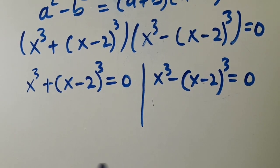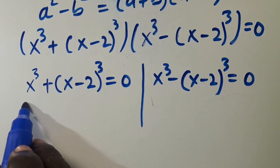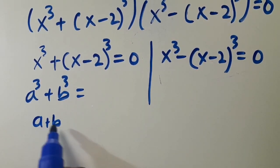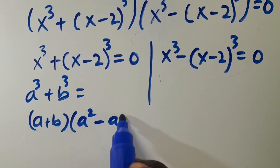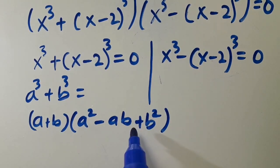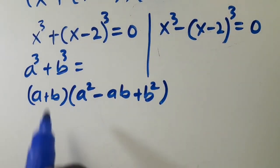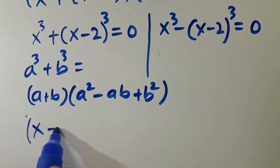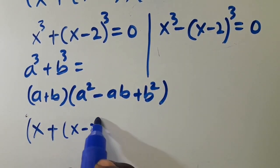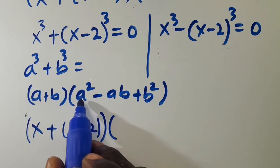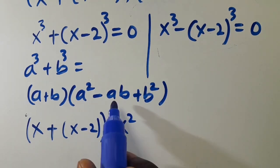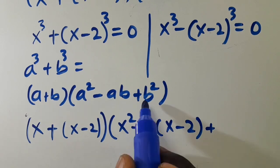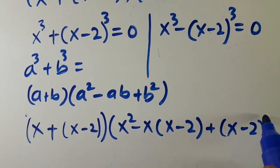Let's apply the sum of two cubes: when you have a to the power of 3 plus b to the power of 3, this equals a plus b, in a bracket, multiplied by a squared minus ab plus b squared. Applying this here, a is x and b is x minus 2, so we get x plus x minus 2, in a bracket, multiplied by x squared minus x times x minus 2, plus x minus 2 all squared, equals 0.